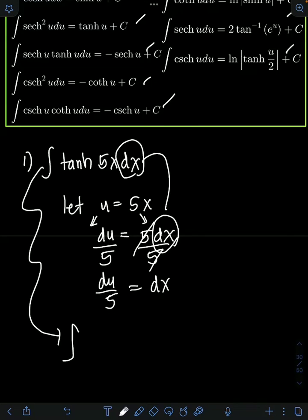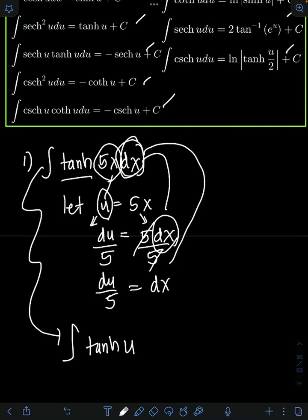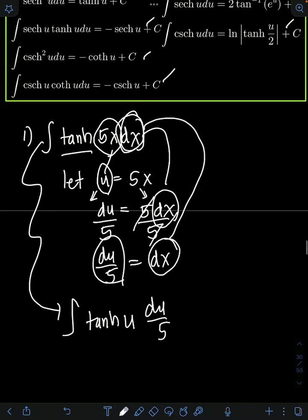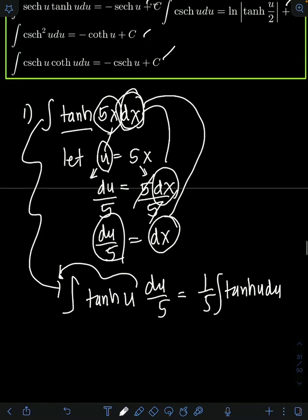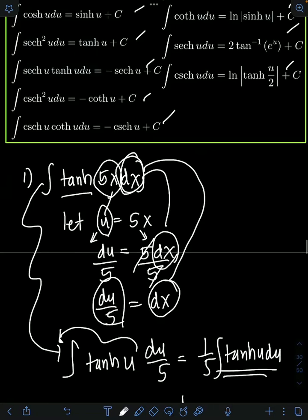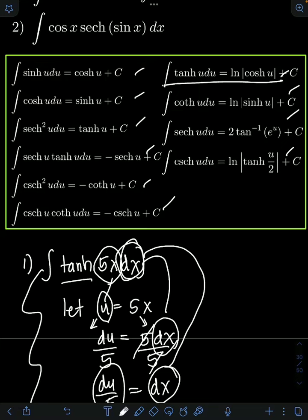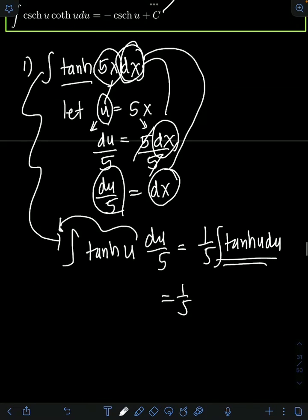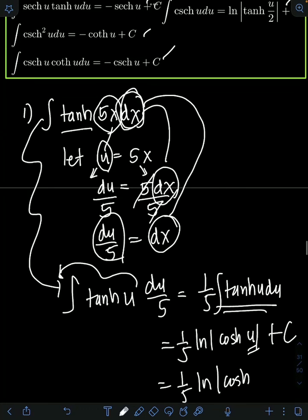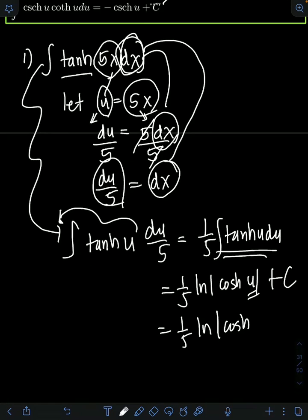Substituting into the original integral: tanh(5x) becomes tanh(u), and dx becomes du/5. The 1/5 is a constant, so we put it in front of the integral, giving us (1/5) integral of tanh(u) du. Looking at the formula, the integral of tanh(u) du equals ln(cosh u) + c. Therefore, we have (1/5) ln(cosh u) + c. Substituting back u = 5x, the final answer is (1/5) ln(cosh 5x) + c.